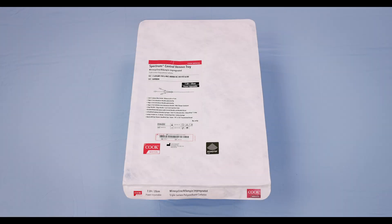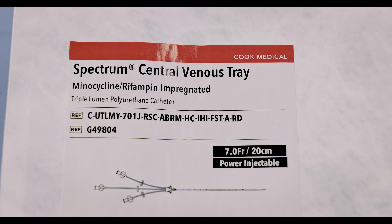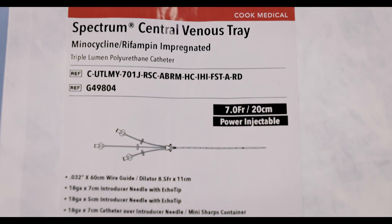We feature the 7 French kit in this video. Contents of kits vary depending on catheter size. The kit is supplied in a sterile peel-open package to ensure product integrity and facilitate easy identification. The packaging is clearly labeled to denote key features, including antimicrobial impregnation with minocycline and rifampin, and power-injectable compatibility.